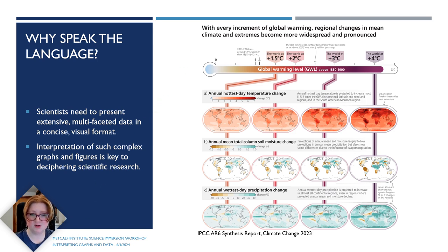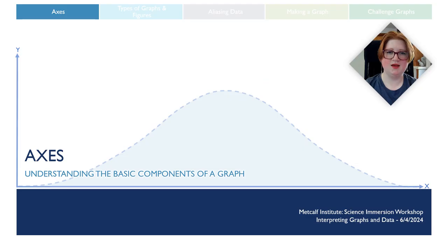However, this is a much more advanced graph, so let's take a step back and talk about the basics. The first thing to do when you look at a graph is to orient yourself to the axes. The axes are your map and compass for any graph.